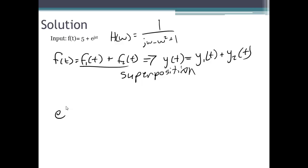Also remember that e to the j omega t input into a linear time invariant circuit with a frequency response h of omega will output h of omega, the frequency response, times that input e to the j omega t. So we'll use these two concepts to solve for our output.